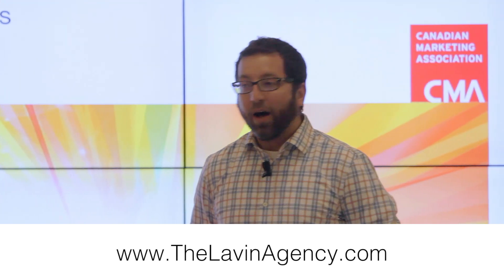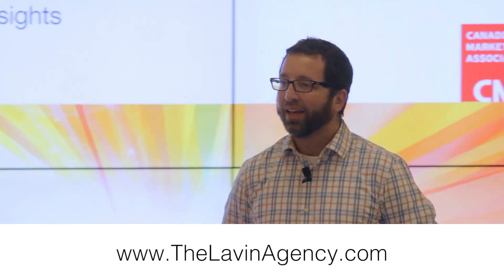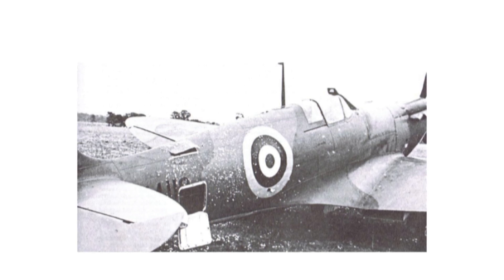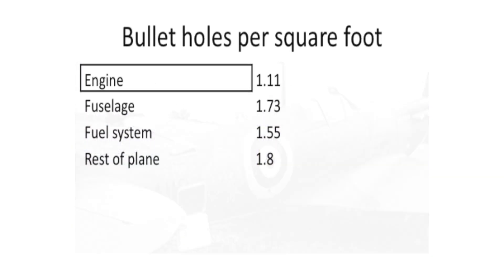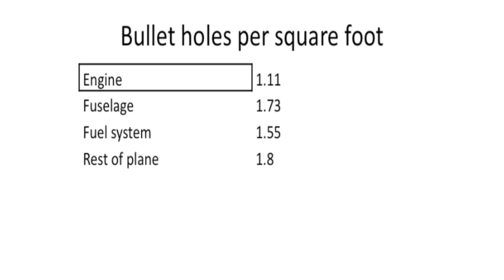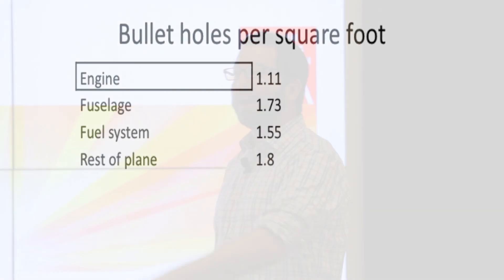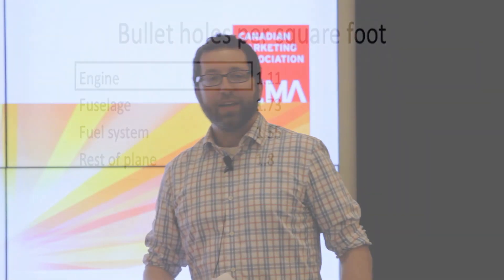At some point, the army comes down to the SRG and they have a question. They say there's some data analysis we need you to do. We have noticed that when the planes come back from flying missions over Germany, some parts of the plane were getting hit more than others. You can see that there were more hits on the fuselage of the plane, less on the engine. This was the kind of data that was given to Abraham Wald.